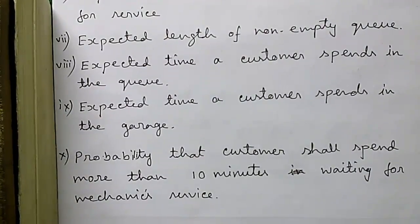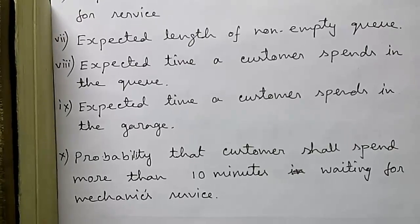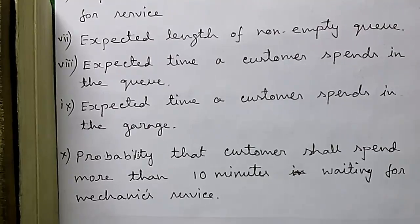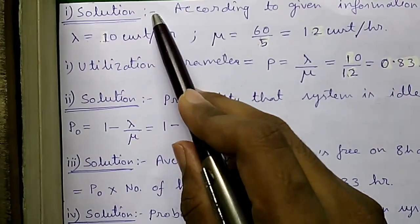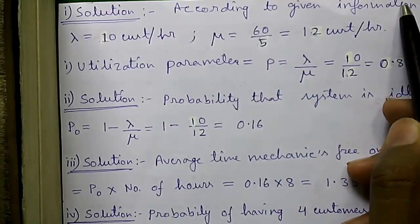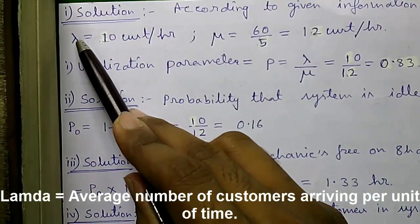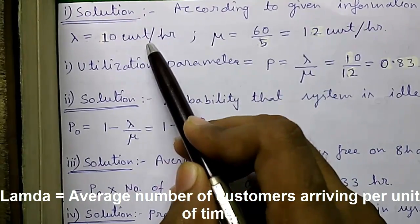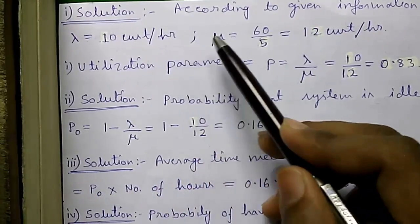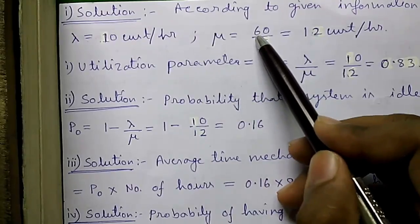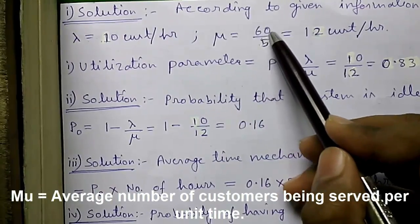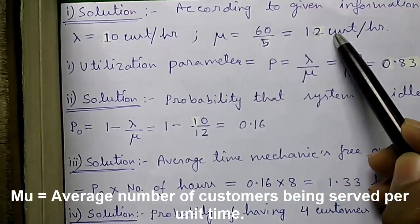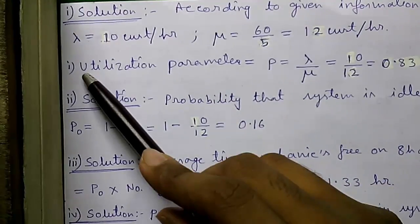That's why there is a long list of problems but after solving this you should be able to solve other types of problems also. So let's start. So let's proceed to the solution. According to the given data we have lambda or mean rate of arrival of customers is 10 customers per hour.